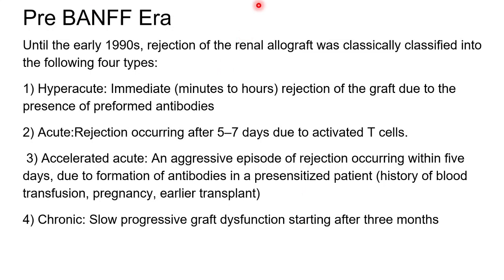Before Banff, rejection was classified into four types: hyperacute rejection, acute rejection, accelerated acute rejection, and chronic rejection. Hyperacute occurs within hours, acute within five to seven days, accelerated is an aggressive form of acute rejection, and chronic is a slow progressive form.